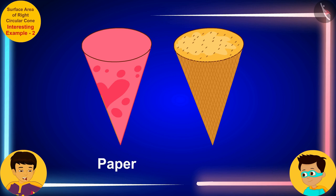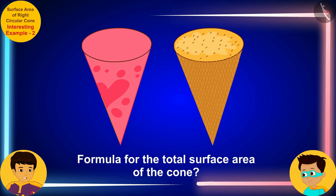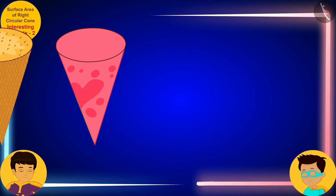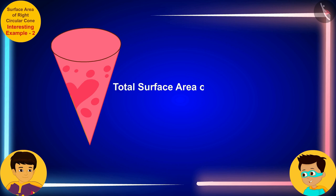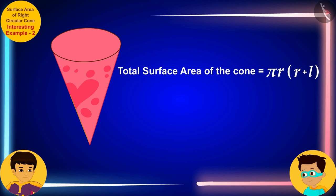Do you remember the formula for the total surface area of the cone, Thomas? The total surface area of the cone is equal to the product of πr and the sum of r and l, where r and l are the radius of the base of the cone and its slant height respectively.